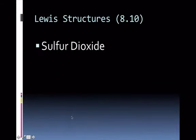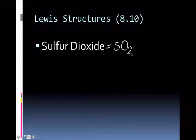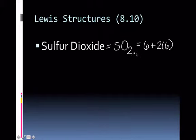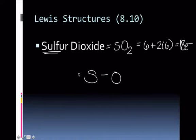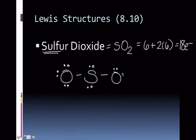Let's do some examples. Sulfur dioxide is SO₂. Sulfur and oxygen are both in column 6A, so I get six valence electrons from the sulfur and six from each of the oxygens — 18 total. I put sulfur in the center and start by single bonding the two oxygens. Then I give everybody eight, which gives me 20 electrons — two more than the 18 I said I could have.